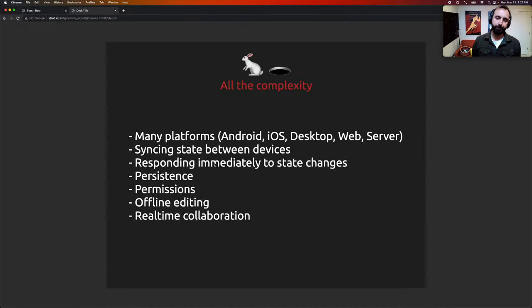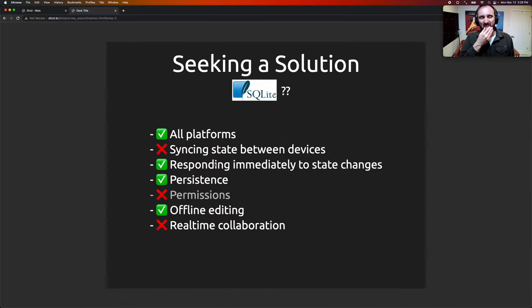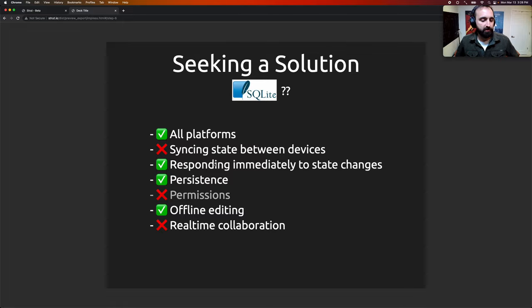I found tons of complexity everywhere. If you want a completely local app that's native, it has to support many platforms: Android, iOS, desktop, web, even server if you want cloud backups. Syncing state between devices, responding to state changes immediately, handling persistence, permissions, offline editing, real-time collaboration — all these concerns pile up. There are existing projects like AutoMerge, YJS, RxDB, and Ditto.Live, but they all had trade-offs I wasn't comfortable with: some create an entirely new database, some lack persistence, some are JavaScript-only, and some retain all history for all time — leading to ever-increasing data volumes, which isn't great for targeting low-end devices.